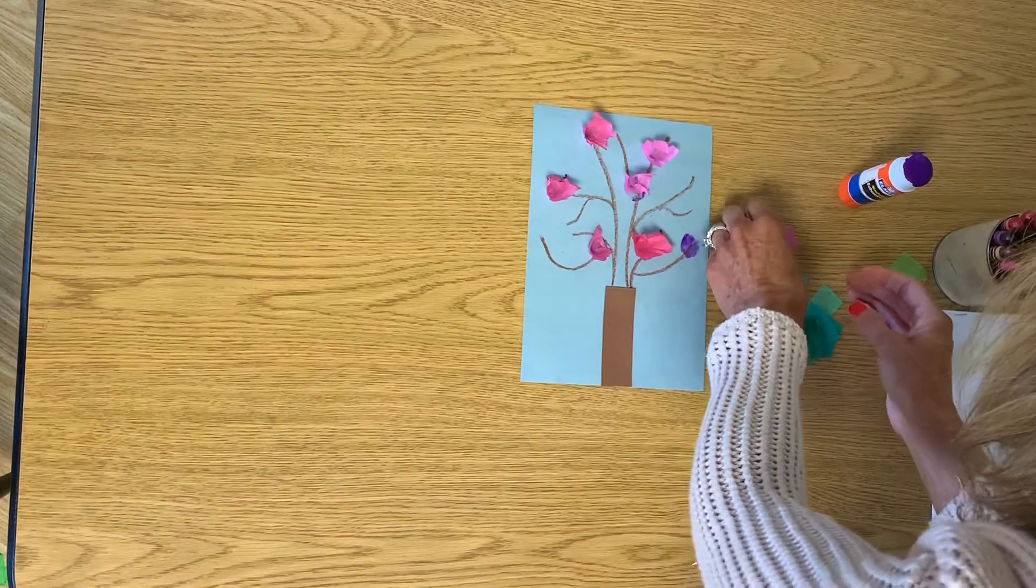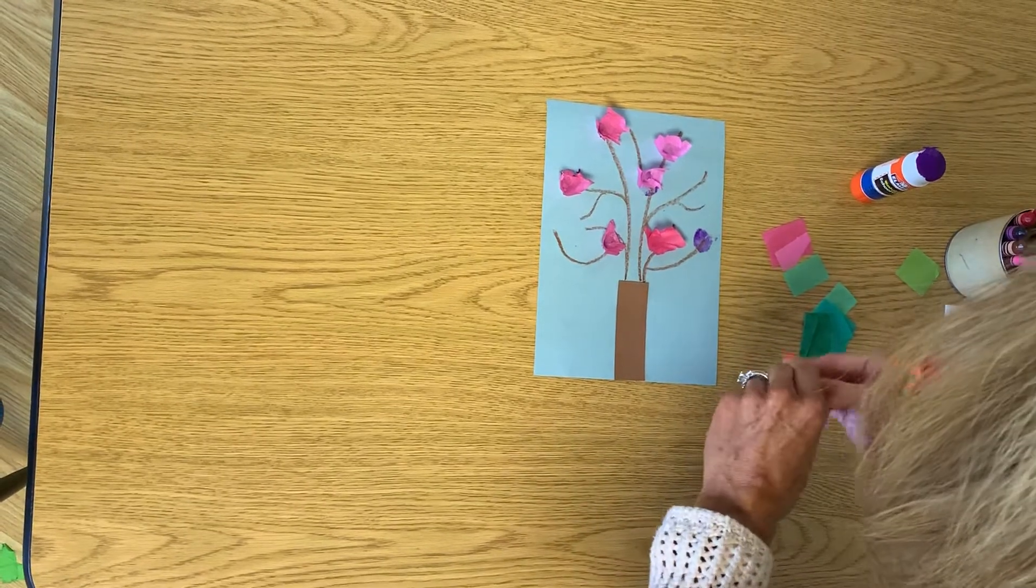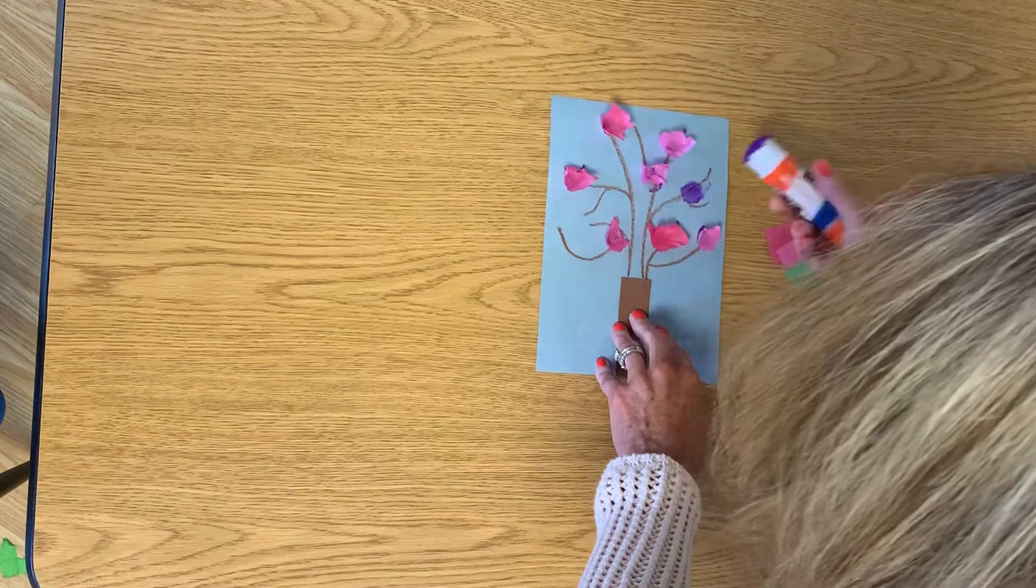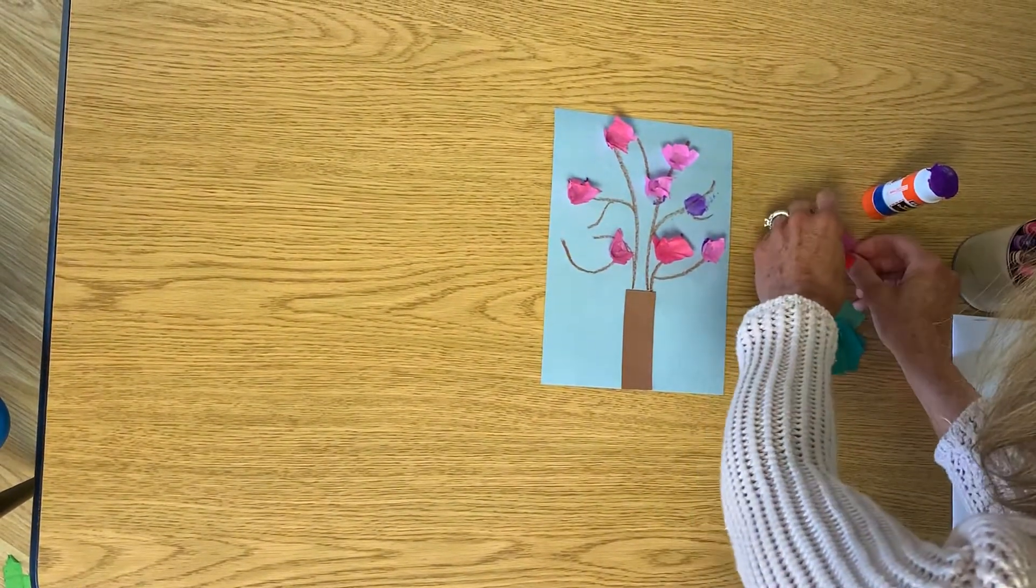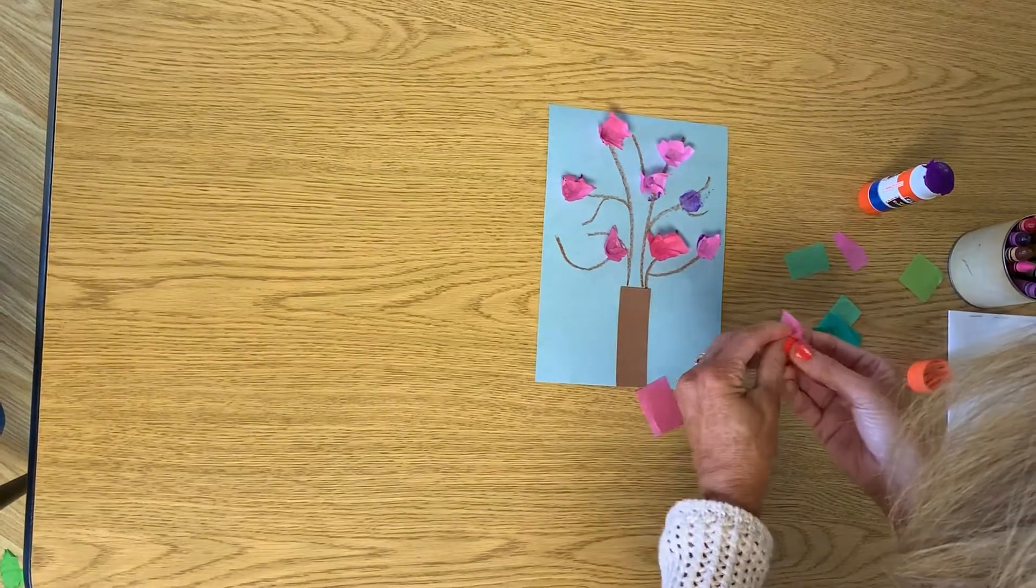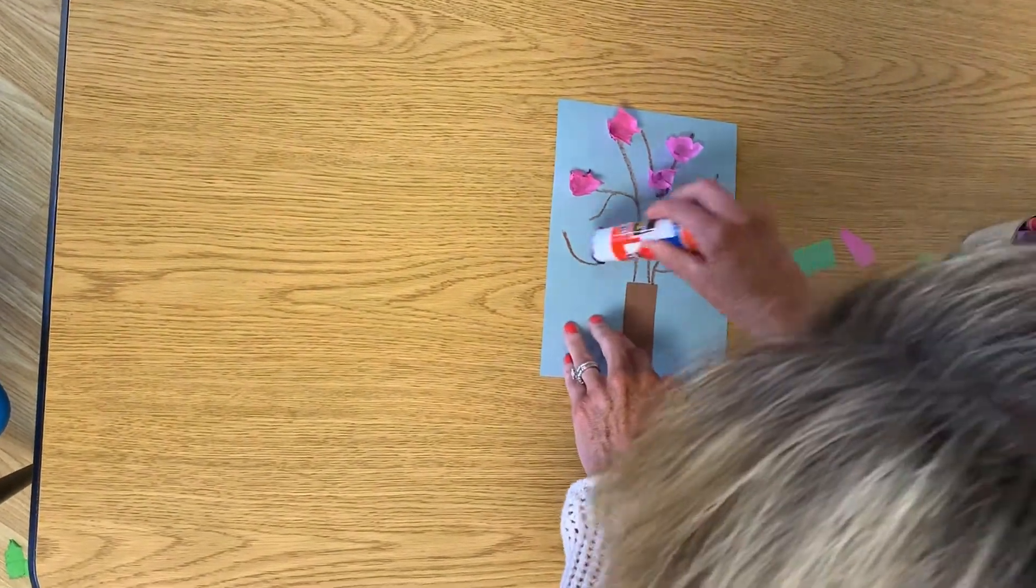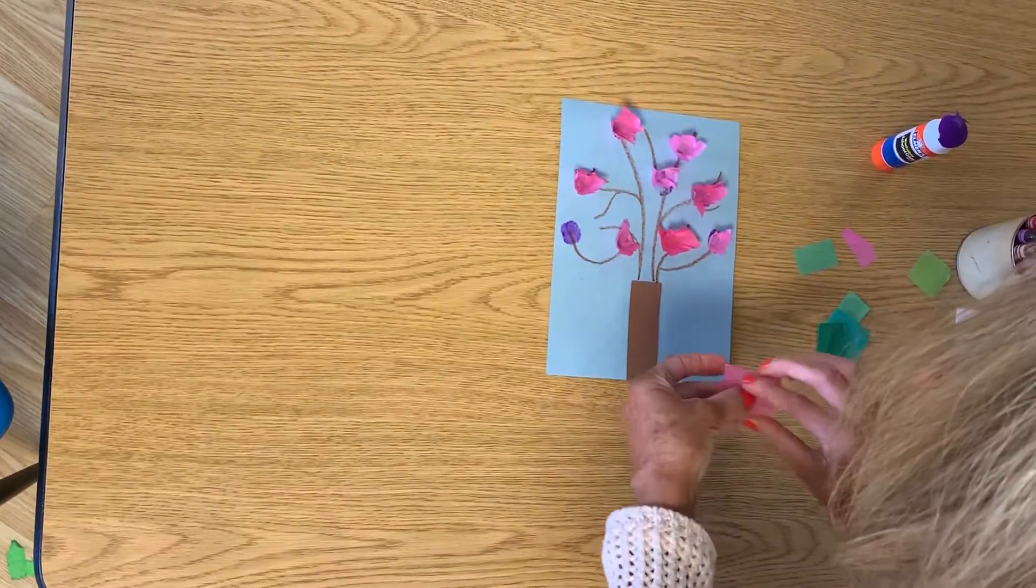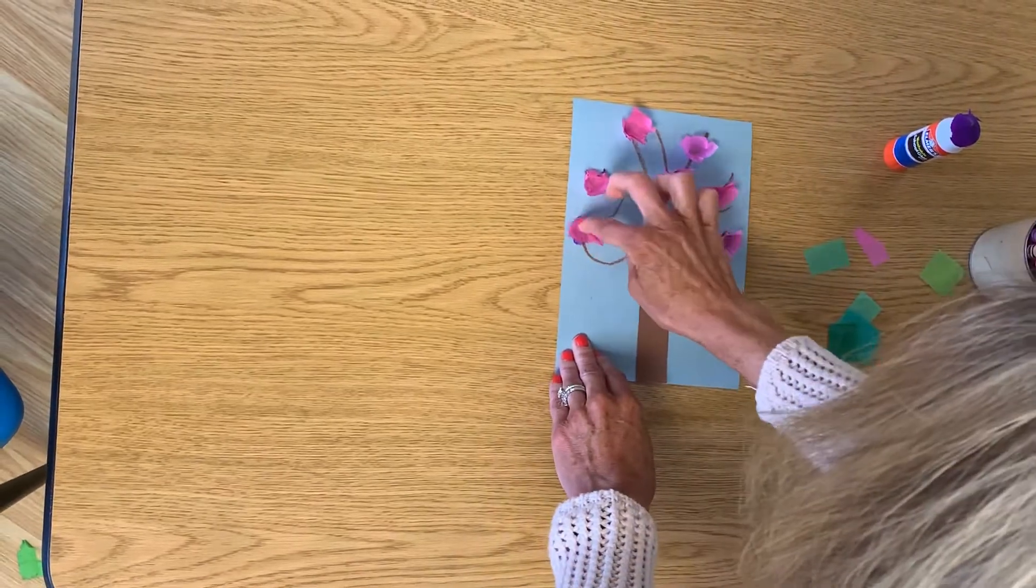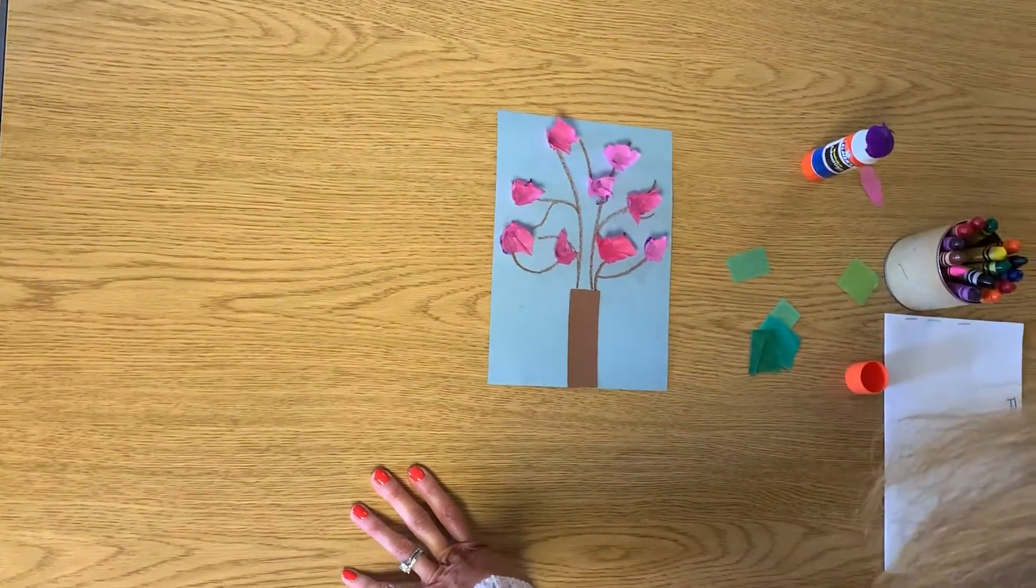Once I've used all of the tissue paper, that tells me I'm done with the blossoms. It looks like I need one more over here. And this piece right here is too small to wrap around my finger, so I'm not going to use that one.